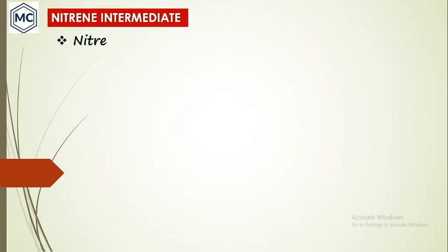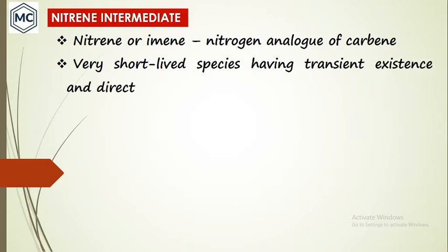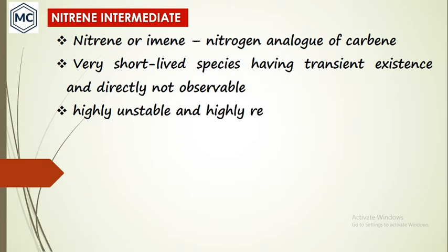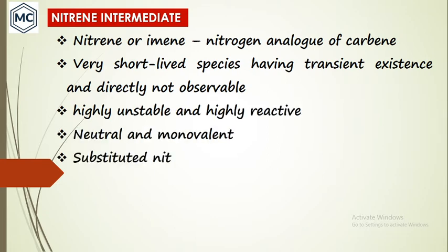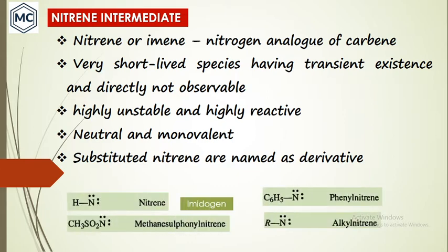Nitrene intermediaries — nitrene is also called imine, and it is actually a nitrogen analog of carbene. Carbene is another intermediate. As we already know, it is a very short-lived species having transient existence and not directly observable. It is unstable and highly reactive. Nitrene is a neutral molecule and it is monovalent — that is important. Usually substituted nitrenes are named as derivatives, for example phenyl nitrene.